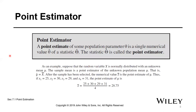A point estimate of the population parameter theta is a single numerical value theta-hat of a statistic. The statistic — I can never remember what that symbol is — is called a point estimator. So I'm just going to call it a point estimator.